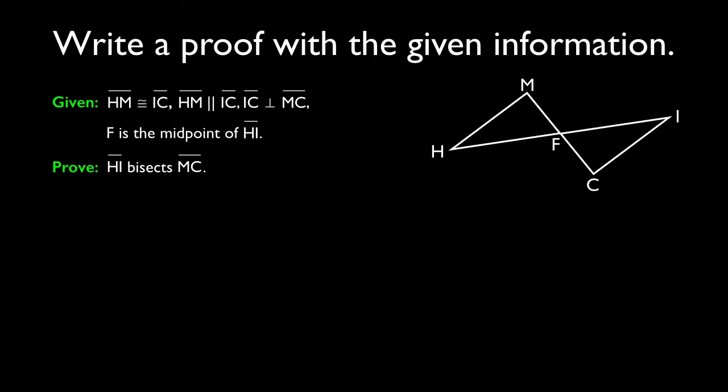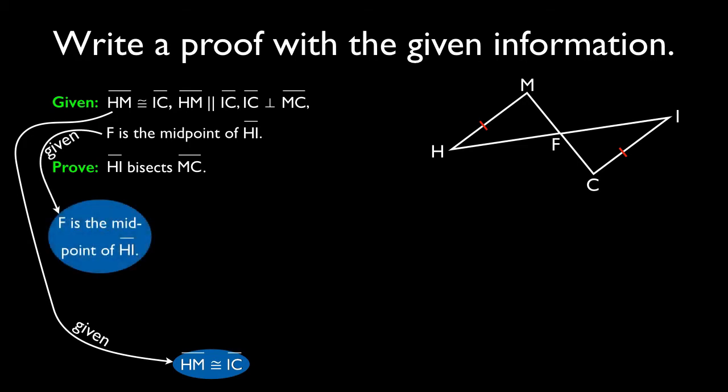So let's see how this looks. Let's start with some given information. We know that segment HM is congruent to segment IC. We also are given that point F is the midpoint of segment HI.